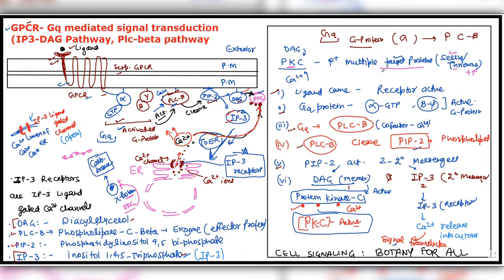Before that, let me quickly summarize the pathway. As soon as the ligand arrives, GPCR becomes active. GPCR activates G proteins — here the G protein is specifically of the GQ type, so this is GQ-mediated signal transduction. The receptor GPCR activates the effector protein PLC-beta. PLC-beta activates — actually cleaves — PIP2, which is a phospholipid of the membrane. Lipase C means 'one that breaks lipids.' Cleaving PIP2 produces two secondary messengers: diacylglycerol (DAG) and IP3. DAG activates protein kinase C (PKC), which is the final product of this pathway. IP3 travels to the ER membrane, where IP3 receptors exist.